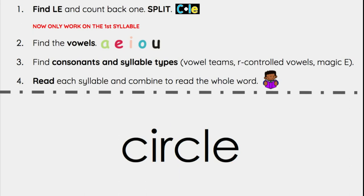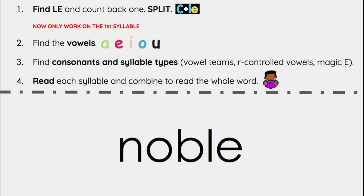Let's do one more word. Again, we start by first finding L-E and counting back one, then splitting. Here's L-E — count back one and split. Next, only looking in the first syllable, we find any vowels. Here's a vowel right here. I don't see any syllable types and there's no consonant after it, so that means this is an open syllable. The O is going to say 'O.' So it's going to say 'no' — 'ble' — noble.